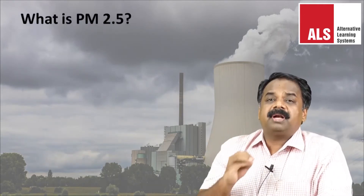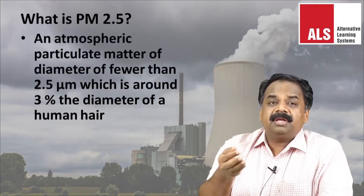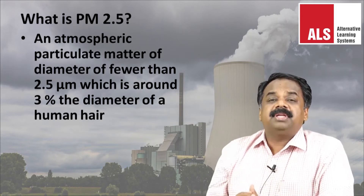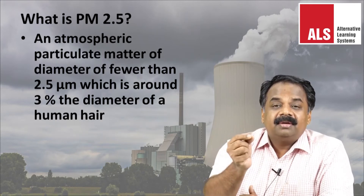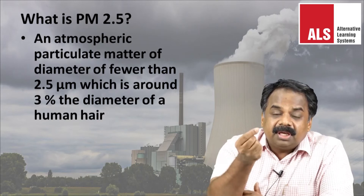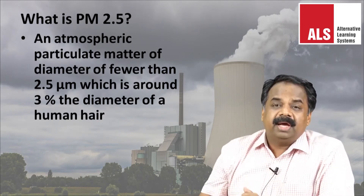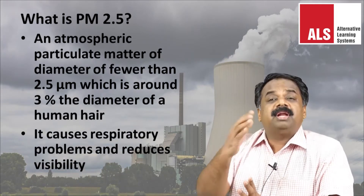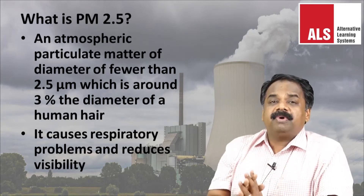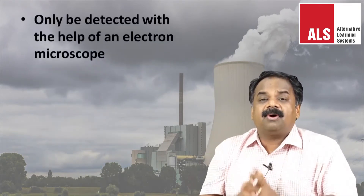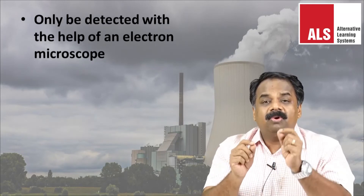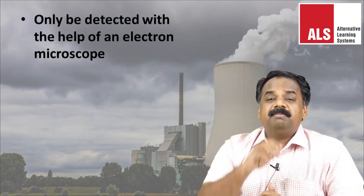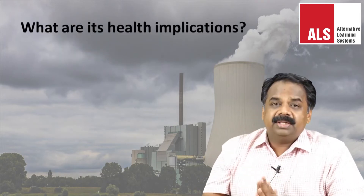PM 2.5 is an atmospheric particulate matter with a diameter fewer than 2.5 micrometers — around 3% of the diameter of a human hair. It causes respiratory problems and reduces visibility in the atmosphere. PM 2.5 can only be detected with the help of an electron microscope because the particles are so small.